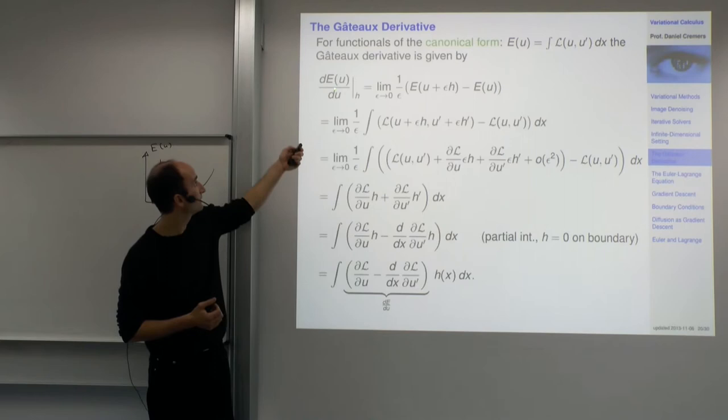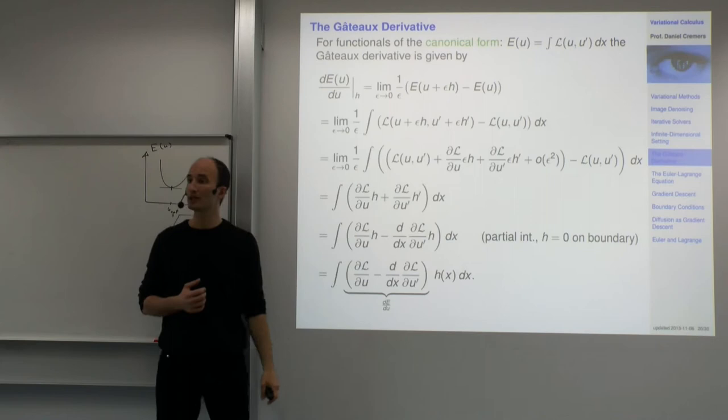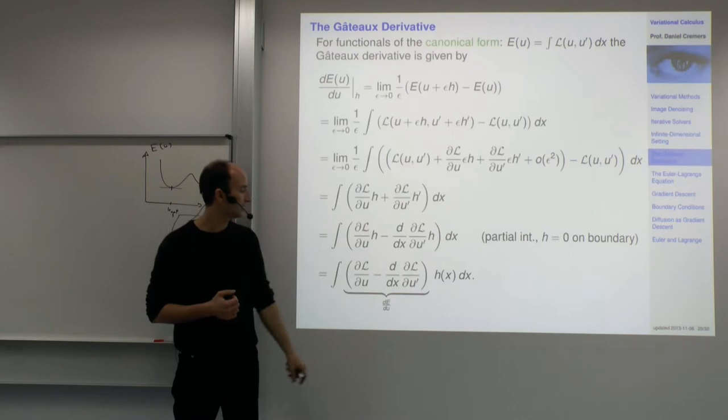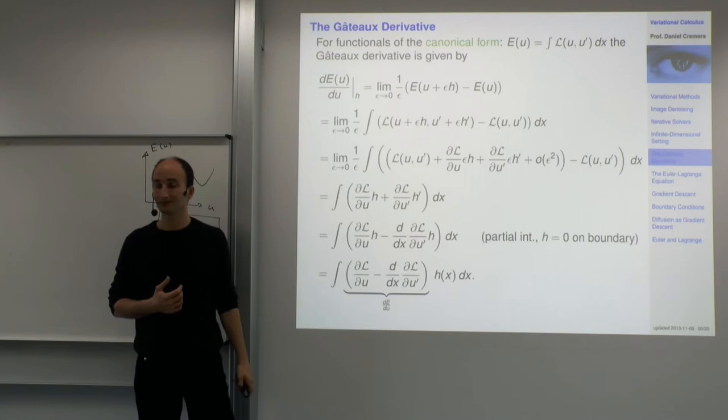We pull out h, and what remains is h times the expression in the brackets. The directional derivative in direction h is nothing but the functional gradient projected onto h. So we can read off that this expression in brackets is actually the functional gradient — dE by du for functionals of this canonical type.